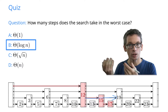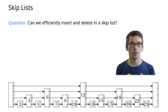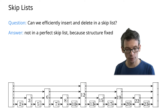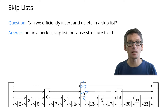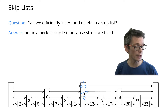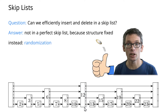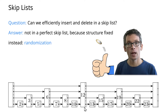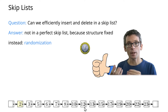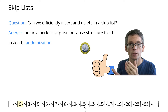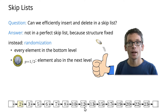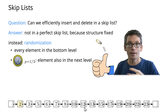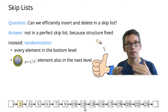This means we can efficiently search in a skip list, but can we also update a skip list efficiently? Not a perfect skip list, because it has a very rigid structure. For instance if I delete the 12 that would completely mess up my structure. What we can do instead is use randomization. So we will randomly decide for every element in which levels it occurs. Let's do this by the example of the 2. Every element will occur in the bottom level, so the 2 is in the bottom level. Now I'm going to flip a coin — if it's heads then the 2 goes up to the next level; tails, I stop.